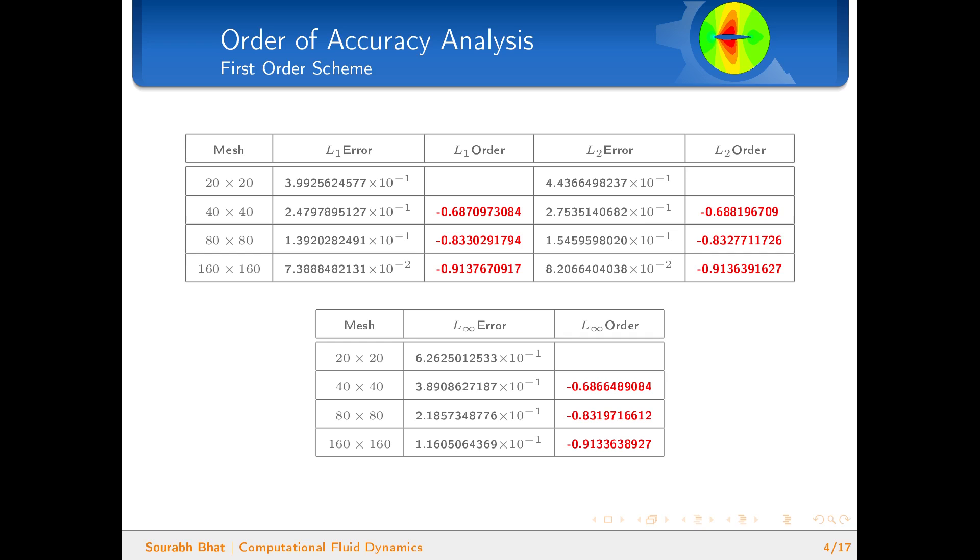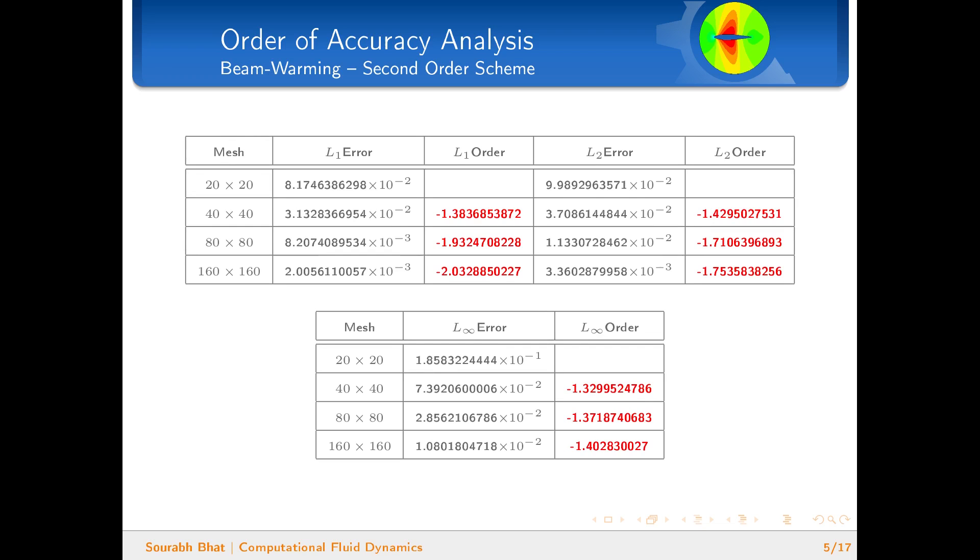The Beam and Warming scheme, which is a second order scheme, gives an order of two as expected for L1 norm, and the L2 and L∞ norms are tending towards two as well.